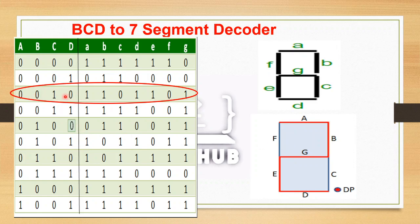For example, for input 0010 (decimal 2), segments C and F are 0 (off) and the others are active to display the digit 2. This is how the BCD to 7-segment decoder truth table works, mapping each BCD input to the appropriate segment outputs up to the value 9.